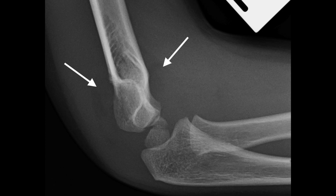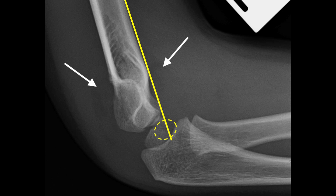Checking for alignment is helpful in determining a fracture. The anterior humeral line is seen on the lateral view and goes along the anterior surface of the humerus — it should pass through the middle third of the capitulum. In cases of supracondylar fracture, the anterior humeral line usually passes through the anterior third of the capitulum or in front of the capitulum.